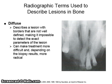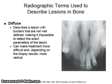A diffuse radiolucency describes a lesion with borders that are not well-defined, making it impossible to detect the exact parameters of the lesion. This can make treatment much more difficult, and depending on the biopsy results, more healthy tissue will need to be removed, making the procedure much more radical.